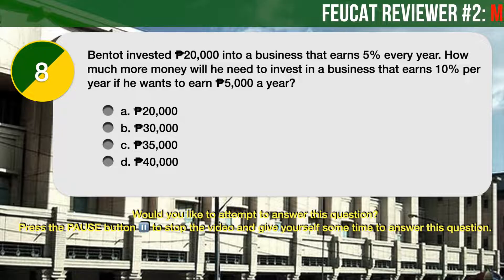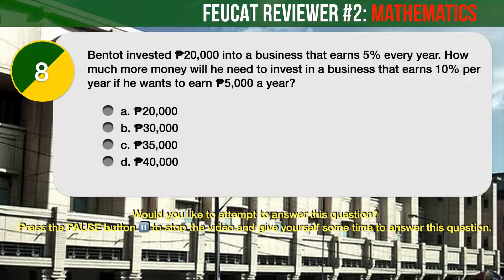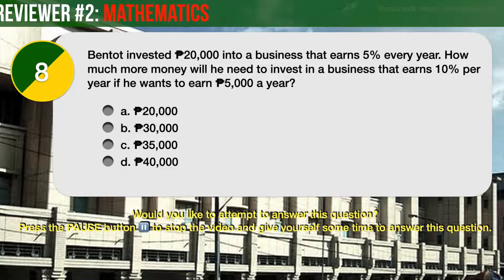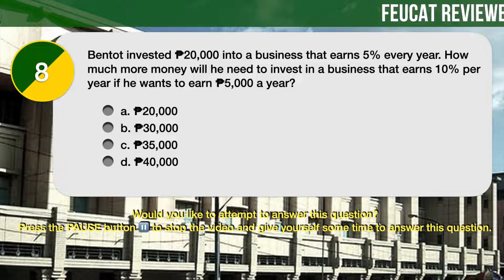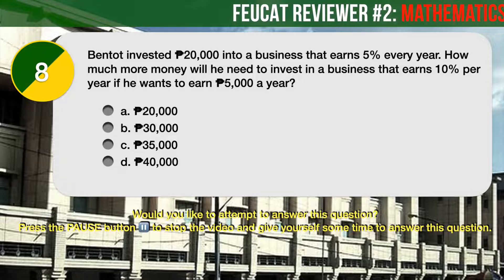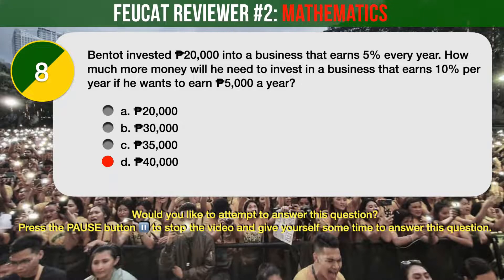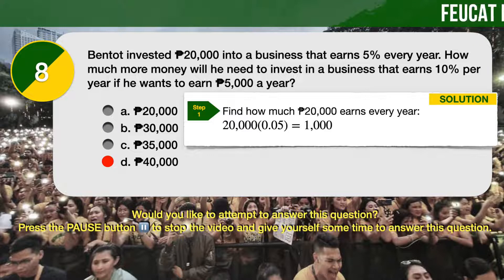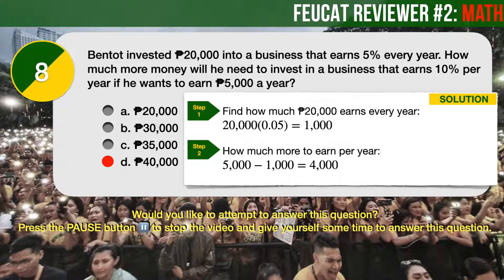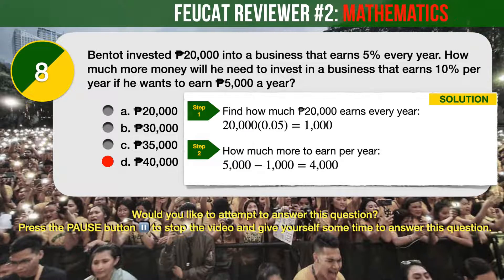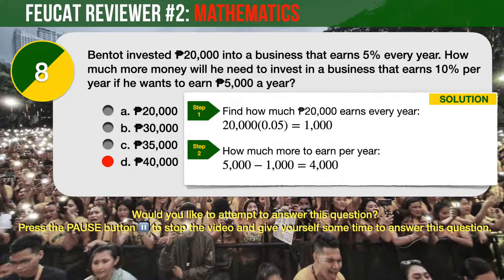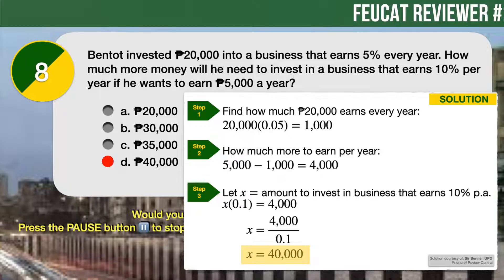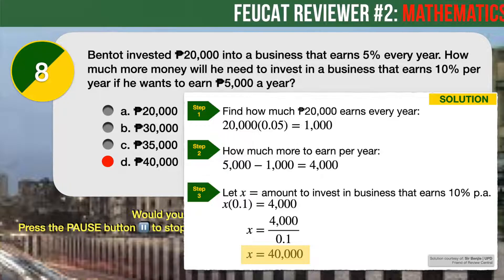Question Number 8. Bennett invested 20,000 pesos into a business that earns 5% every year. How much more money will he need to invest in a business that earns 10% per year, if he wants to earn 5,000 pesos a year? A: 20,000 pesos. B: 30,000 pesos. C: 35,000 pesos. D: 40,000 pesos. The correct answer is D, 40,000 pesos. Bennett's initial investment earns 1,000 pesos per year. He needs 4,000 more per year to reach 5,000. Investing 40,000 pesos at 10% earns the additional 4,000 pesos per year.